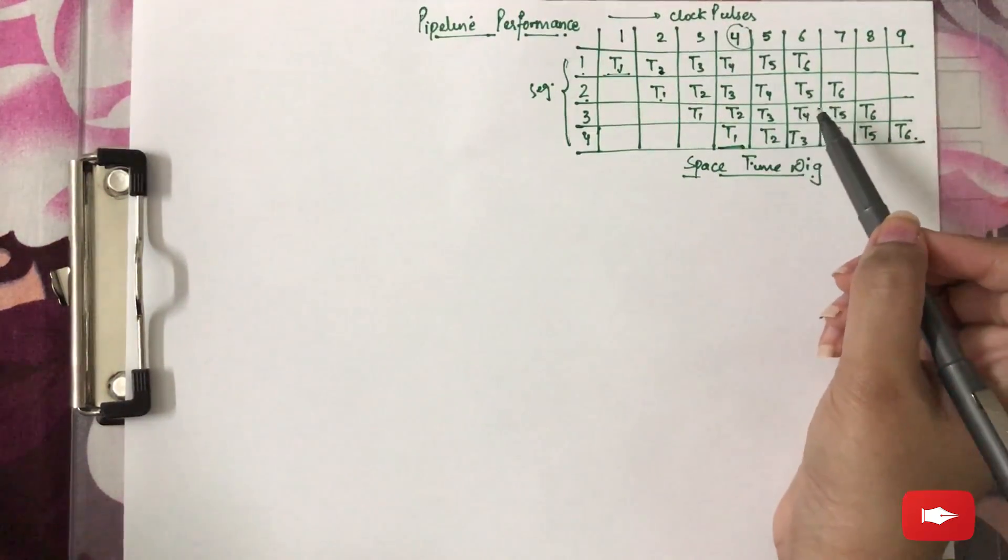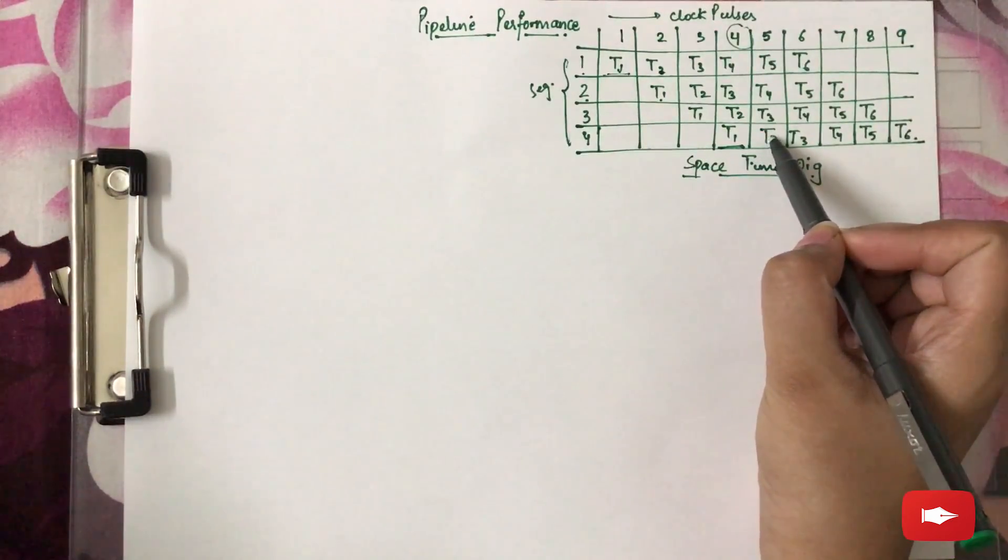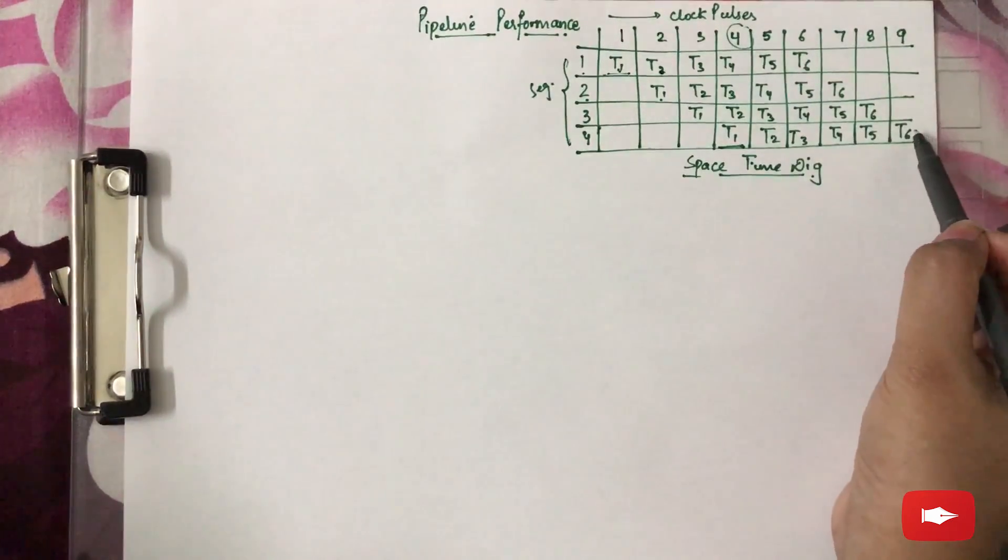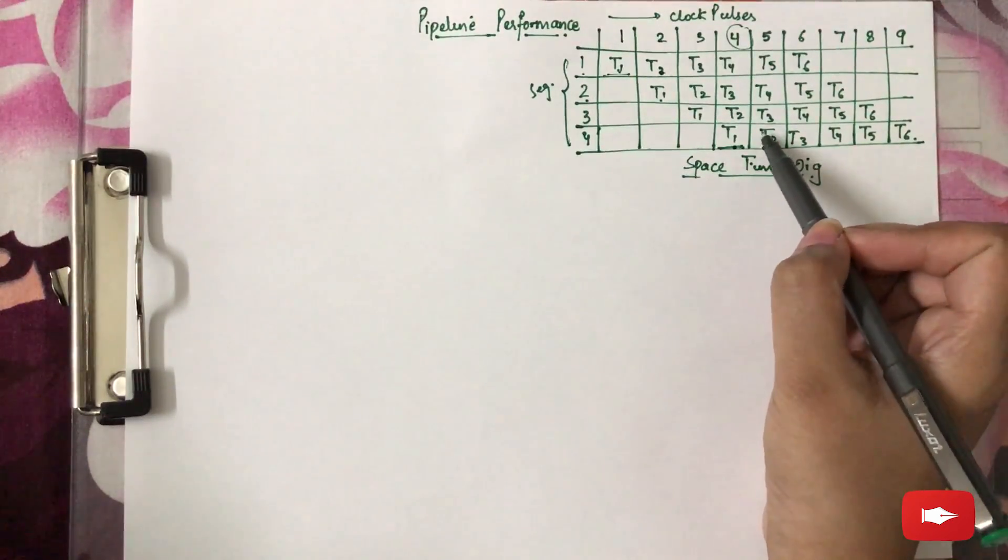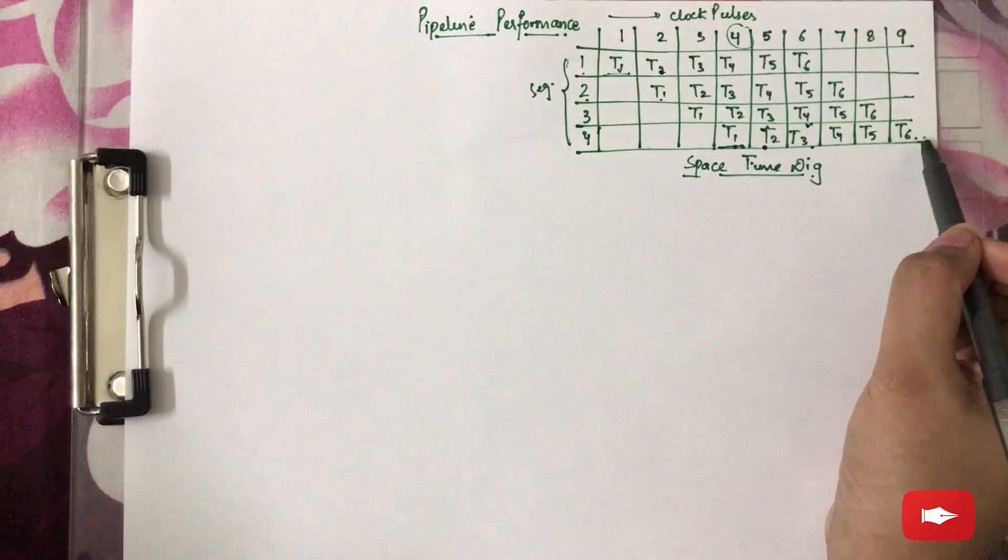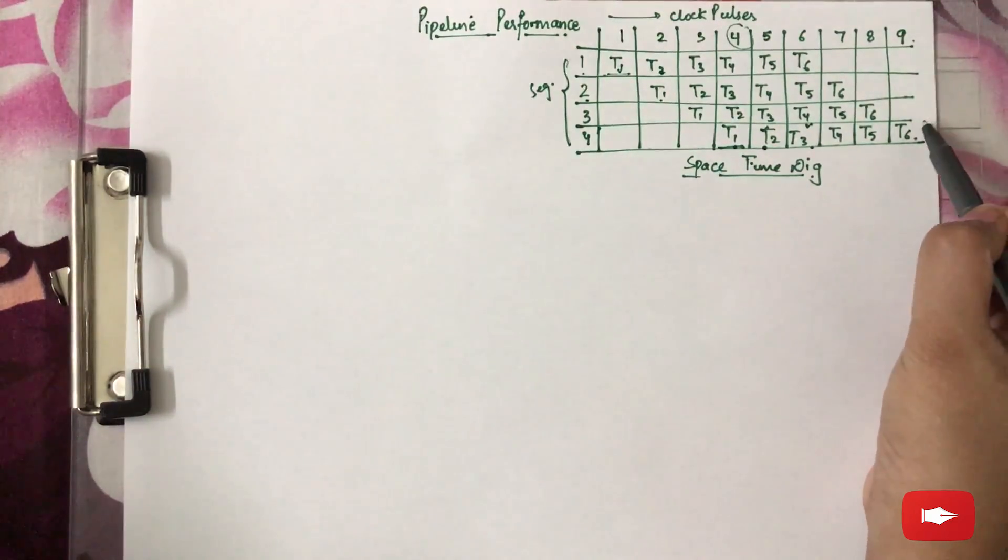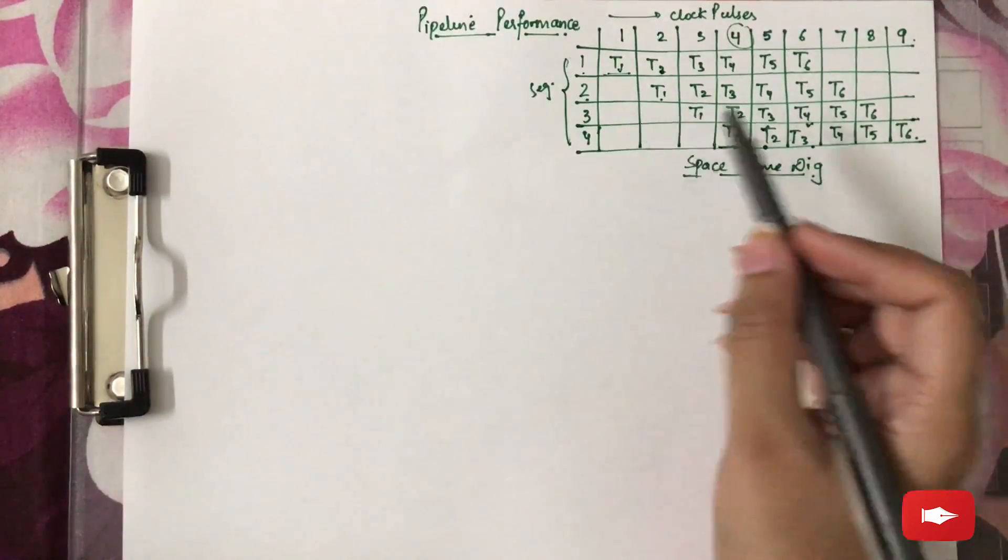From then on, the pipe completes a task every clock cycle. After the fourth clock cycle, in the fifth clock cycle T2 is getting completed. In the sixth clock cycle T3 is getting completed, and so on. In the ninth clock cycle we will complete the sixth task as well. This is the space-time diagram.